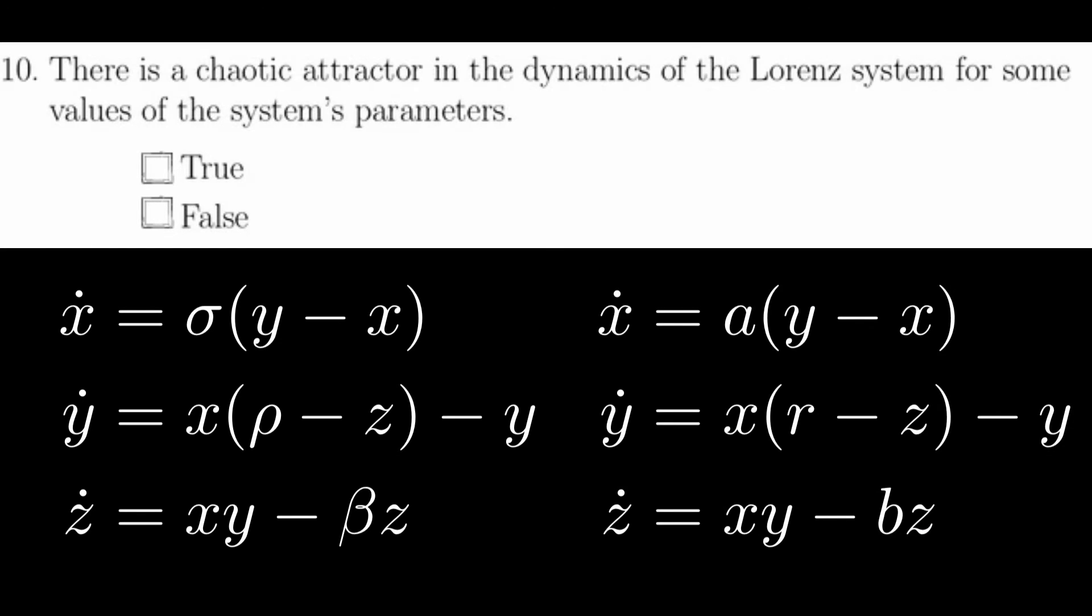Note that sometimes rho, sigma, and beta are called r, a, and b. This can be somewhat confusing, but it's good to start getting in the practice of switching between the names of parameters.